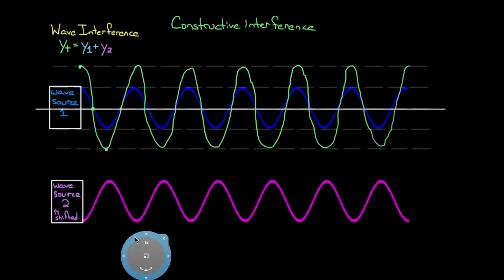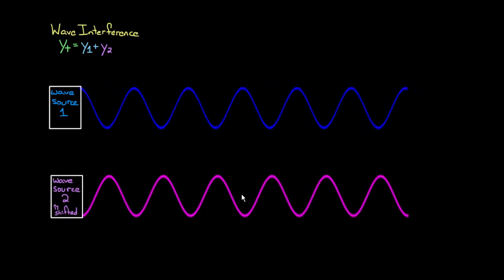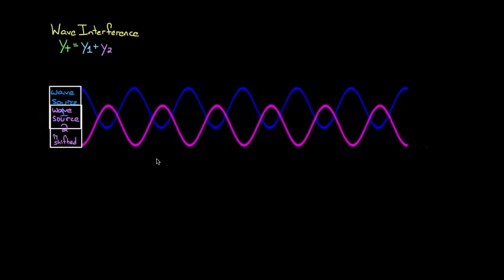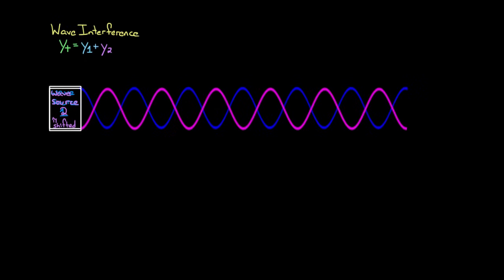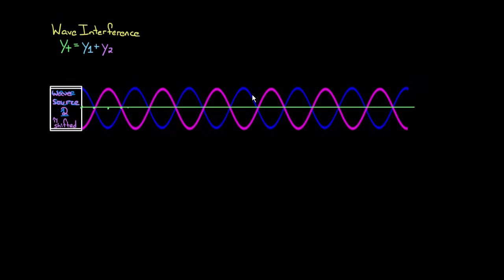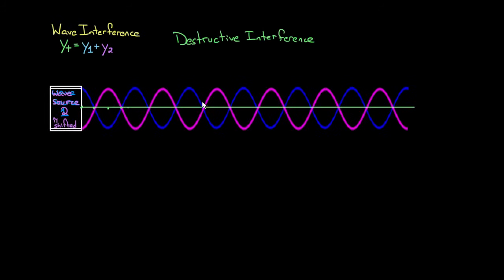So what happens if we overlap these two? I've got one and negative one, one and negative one: zero. Zero and zero: zero. Negative one and one: zero. No matter where I'm at — a half and a negative half: zero. These two waves are going to add up to zero. They add up to nothing. So we call this destructive interference, because these two waves essentially destroyed each other.